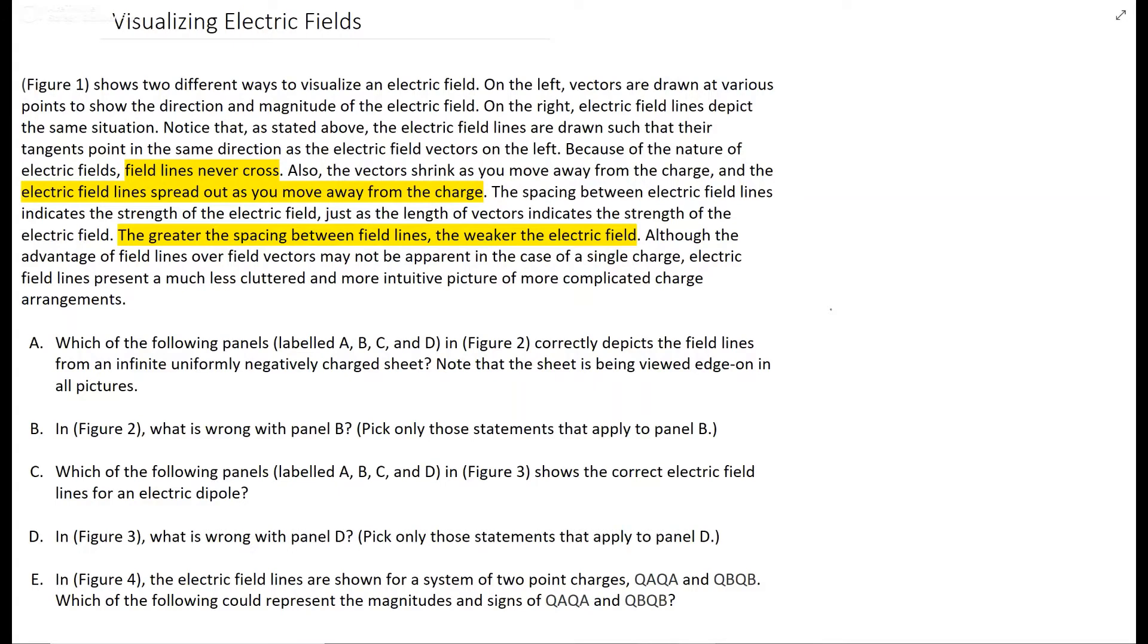Alright, this is a question labeled visualizing electric fields. It starts with this giant paragraph that tells you a whole bunch of stuff. What I thought is important I highlighted, and it's basically the information that field lines never cross, electric field lines spread out as you move away from the charge, and the greater the spacing between field lines, the weaker the electric field. So in my opinion, that's the important information, and then it describes the figures we're about to look at.